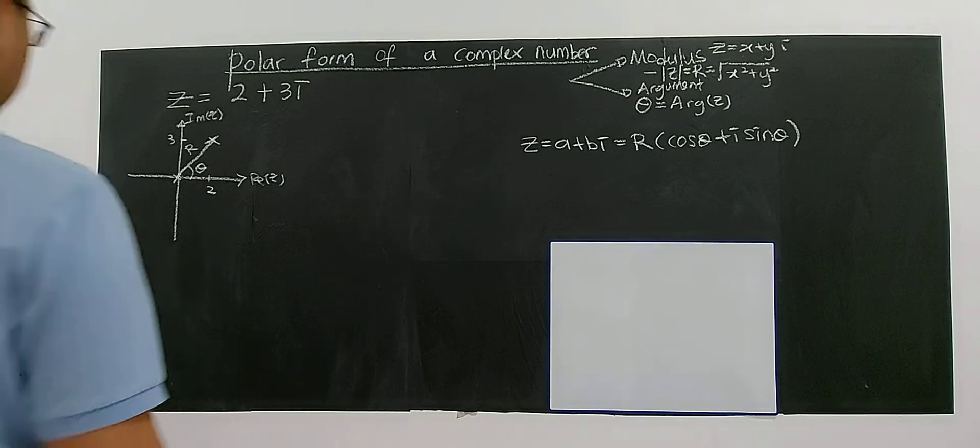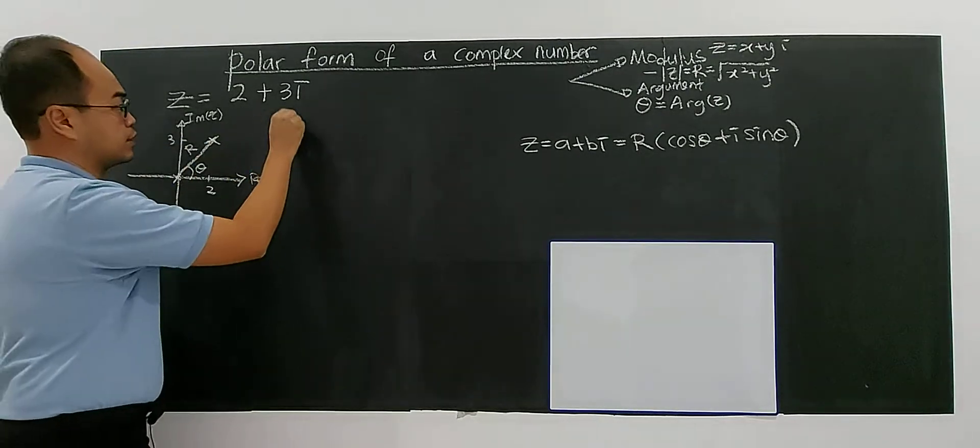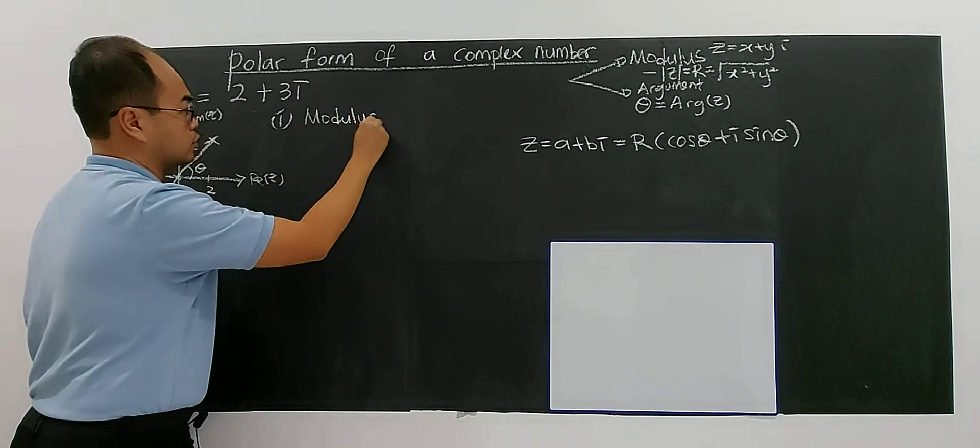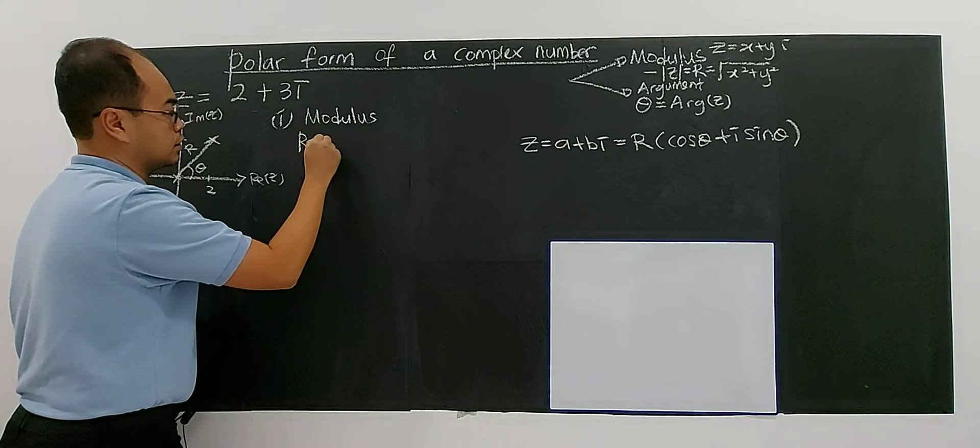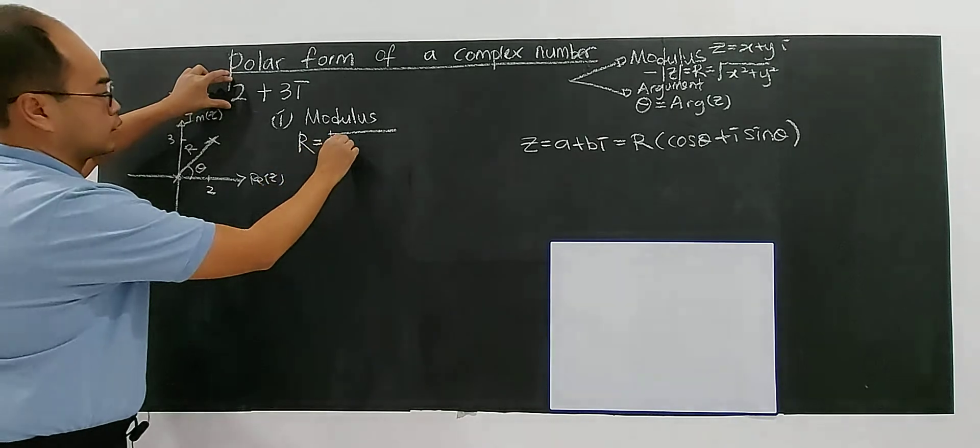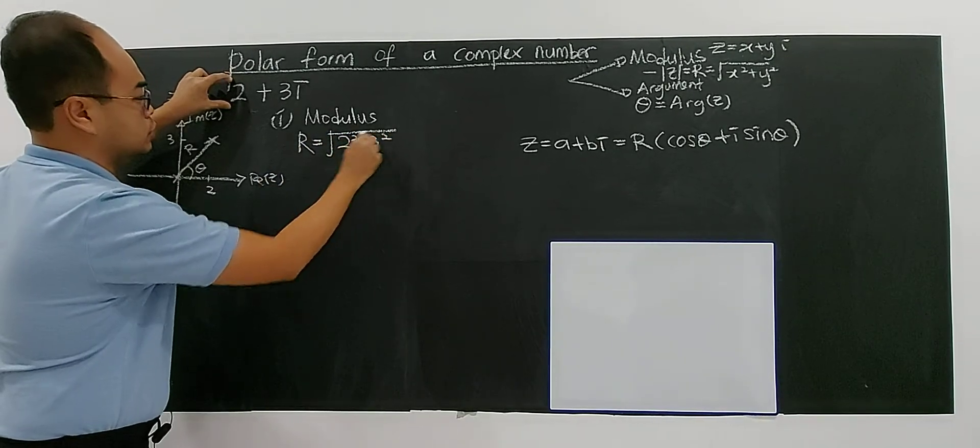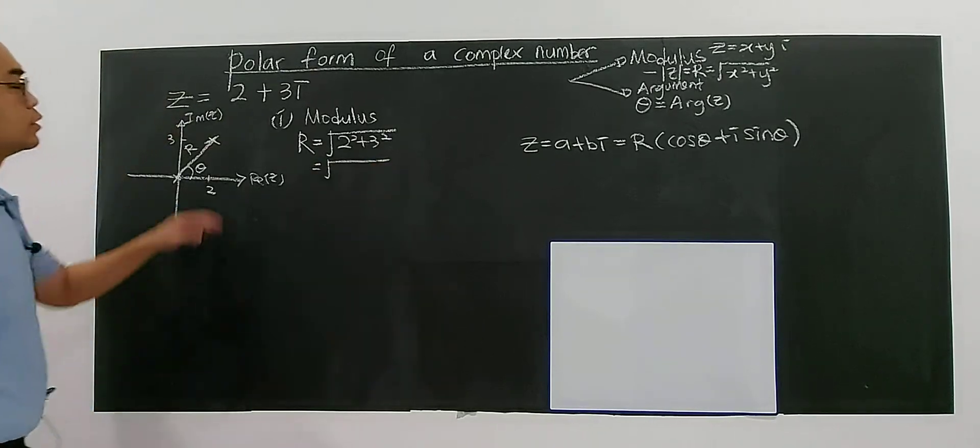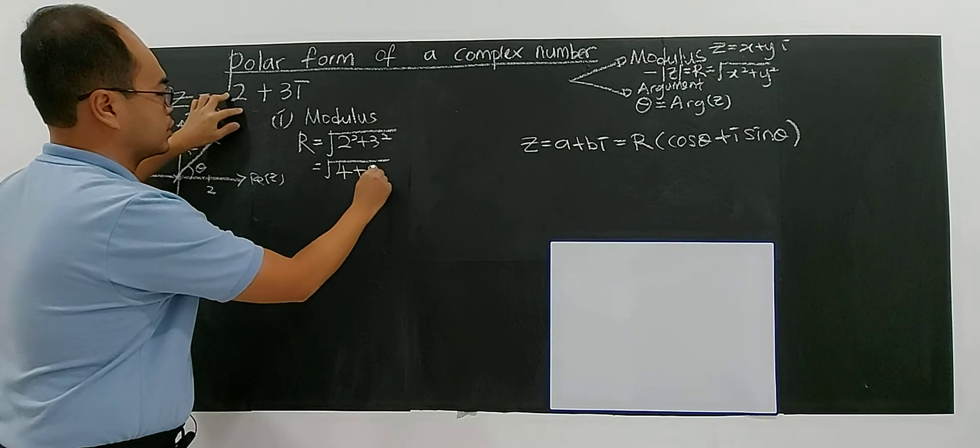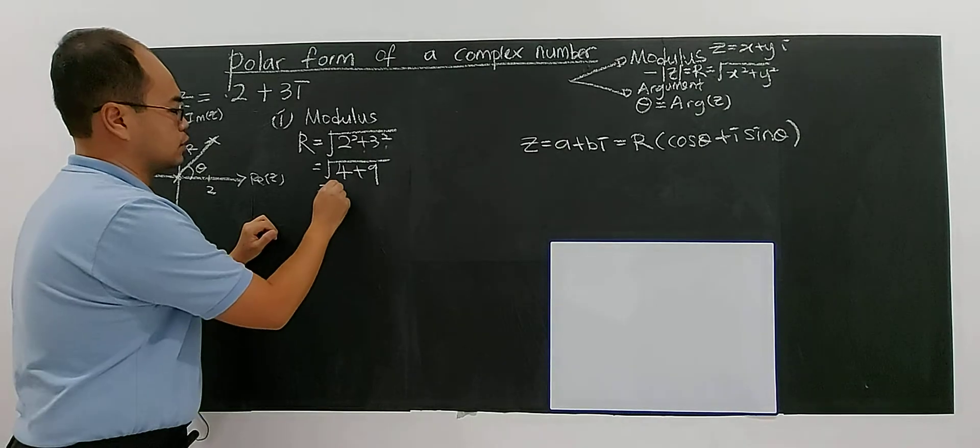Let's find the modulus. The modulus r is the square root of x² and y², so this is √(2² + 3²), which gives you √(4 + 9). Nine plus four gives you √13.